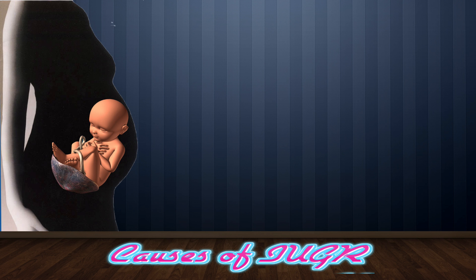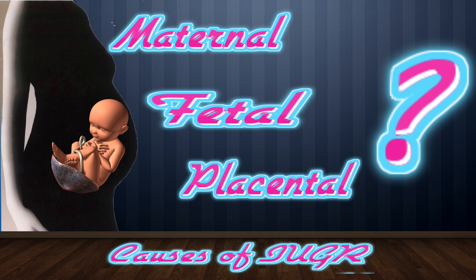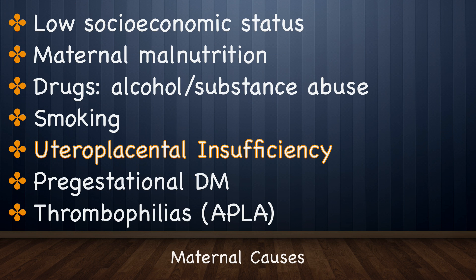Now let us see what are the causes of intrauterine growth restriction. For convenience, the causes of IUGR are divided into maternal, fetal, placental, and idiopathic. Maternal causes include low socioeconomic status, maternal malnutrition, drugs like alcohol, substance abuse, warfarin, phenytoin, smoking, uteroplacental insufficiency resulting from preeclampsia and chronic hypertension (which is the most important cause), pregestational diabetes mellitus, and thrombophilias like antiphospholipid syndrome.